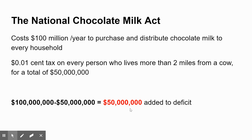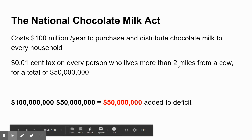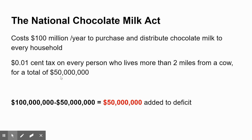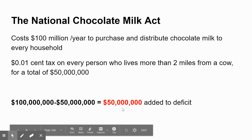I might say that in 30 years there will be a lot more people living more than two miles away from a cow, so a lot more people paying this tax. In 30 years, this tax will raise, say, $80 million. That's great — there'll be a smaller deficit in 30 years from this law, but it will still be a deficit. By then, it will have raised a lot of money that will have added to the national debt.